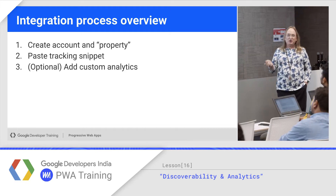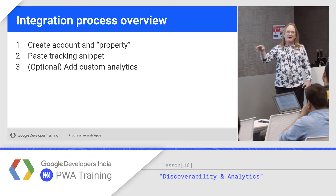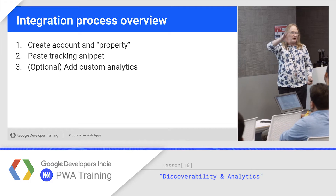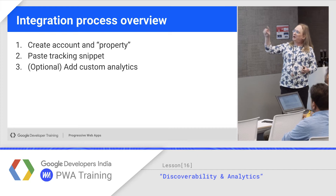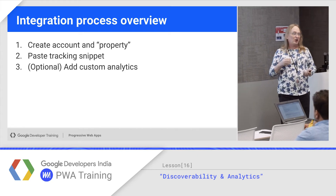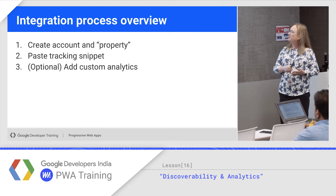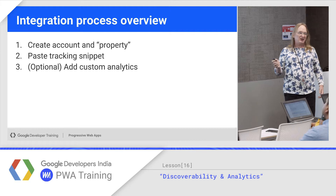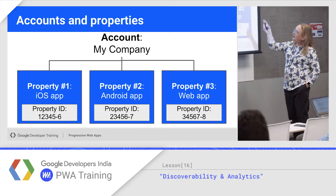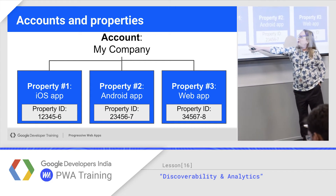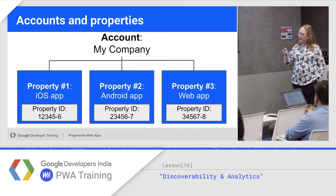What you do is you go into Google Analytics, create an account, which is free, and each account has multiple properties — not JavaScript properties, but multiple locations that it tracks. So each property is one location. For each property, you'll get a piece of JavaScript code called a tracking snippet that has an embedded property number in it. And then optionally, you can do some custom analytics beyond the default. For example, you might have one account, and if you had iOS, Android, and web apps, they would each have unique property IDs, but you would track them under one account.